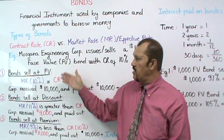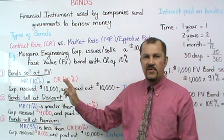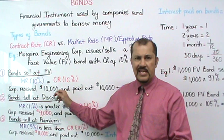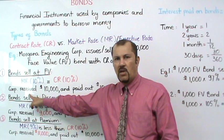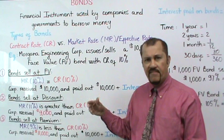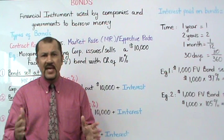Scenario number one: bonds selling at face value. For this to happen, the market rate of 10% must equal the contract rate of 10%. When this relationship exists, the bond will sell at face value. That means Morgana Corporation receives $10,000, and at the end of the bond term — five years — will have to pay out the $10,000 plus interest.